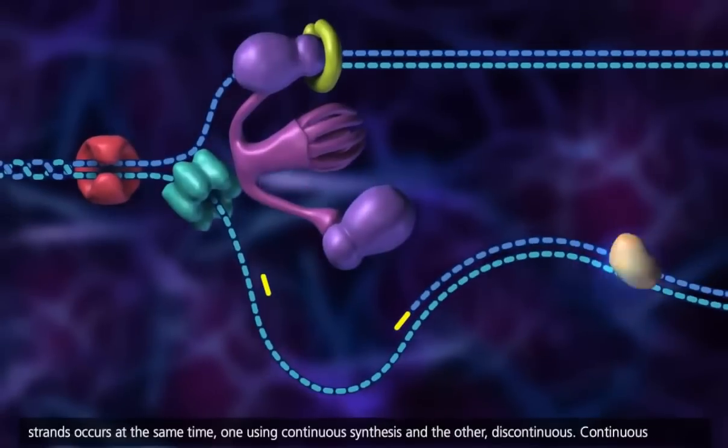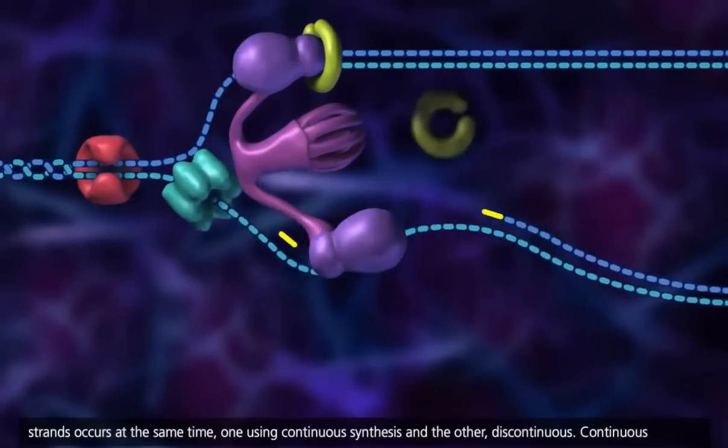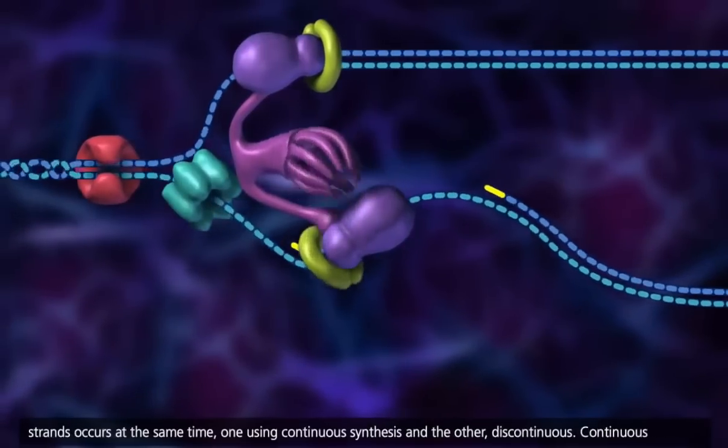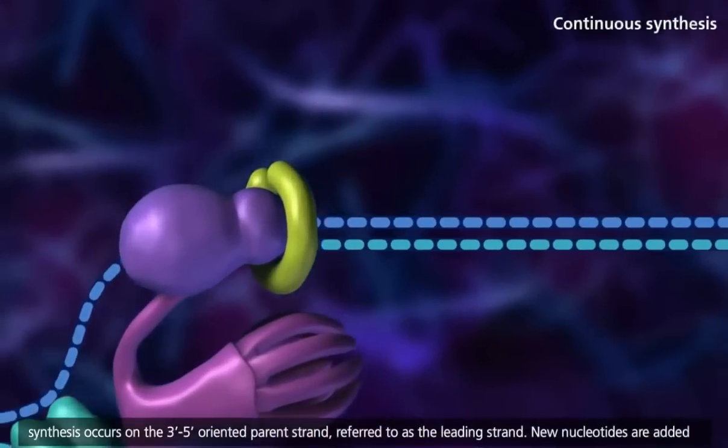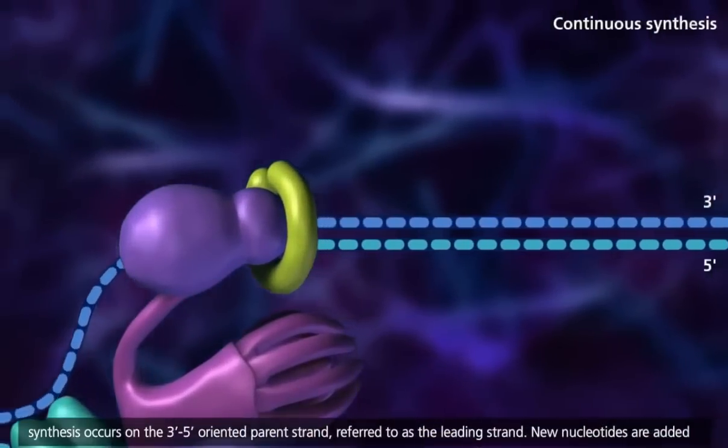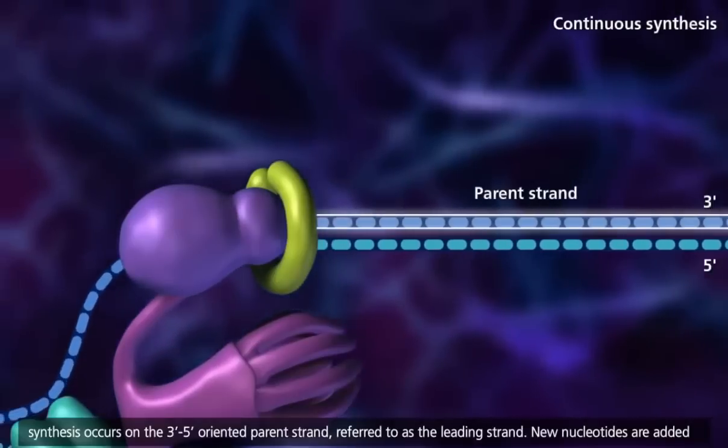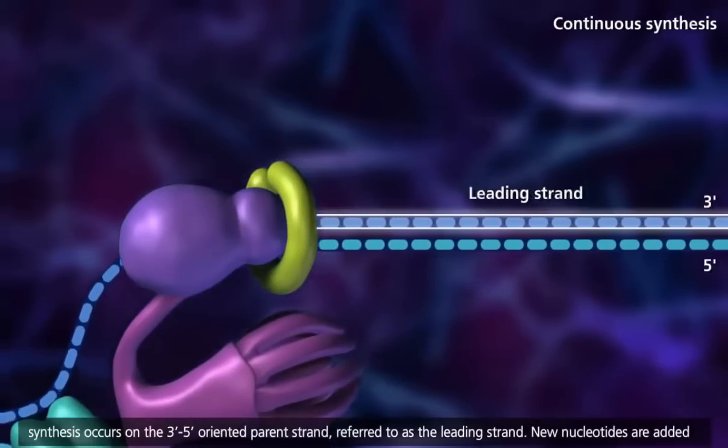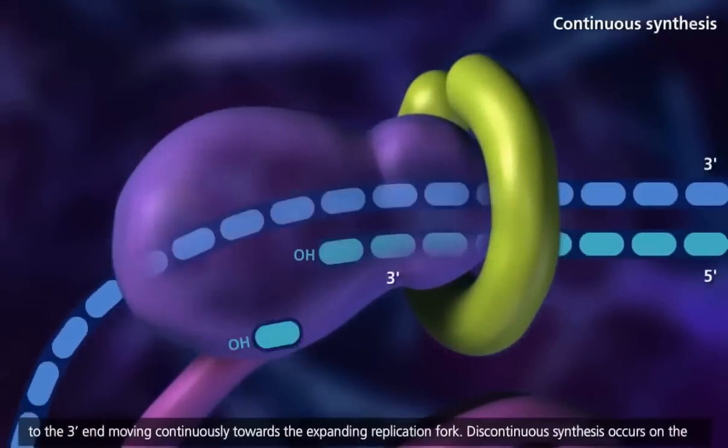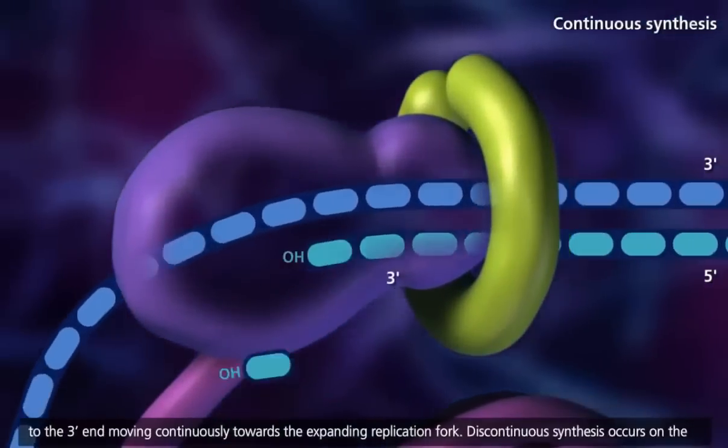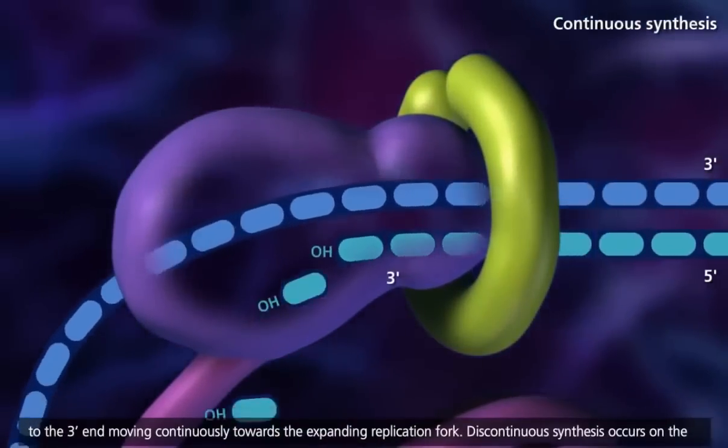Replication of both strands occurs at the same time, one using continuous synthesis and the other discontinuous. Continuous synthesis occurs on the 3' to 5' oriented parent strand, referred to as the leading strand. New nucleotides are added to the 3' end, moving continuously toward the expanding replication fork.